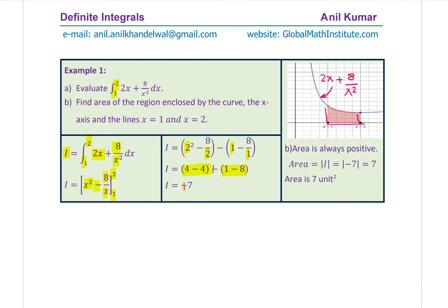So the answer to part A is 7. Now for part B, finding the area: the absolute value of this integral represents the area. Since it was positive 7, it remains positive 7, and we get 7 units squared as our answer. That is how we evaluate the value of the definite integral.